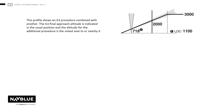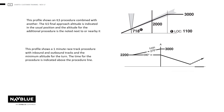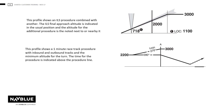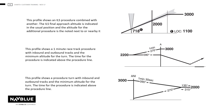Here is an example of a profile with combined procedures. The ILS final approach altitudes are to be indicated. The altitude figures for the other procedure are to be indicated when different to the ILS altitude; this additional altitude figure to be placed as a note, preferably on the lower part of the profile. This profile shows a 1-minute racetrack procedure with the inbound and outbound tracks — the time is indicated above the procedure line. This profile shows a 45-degree procedure turn with the inbound and outbound tracks — the time is also indicated above the procedure line.